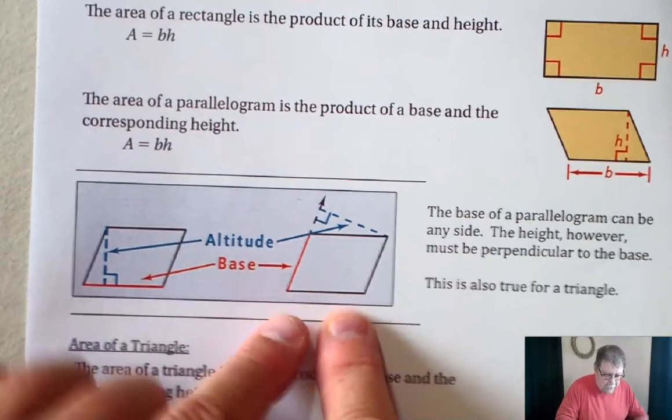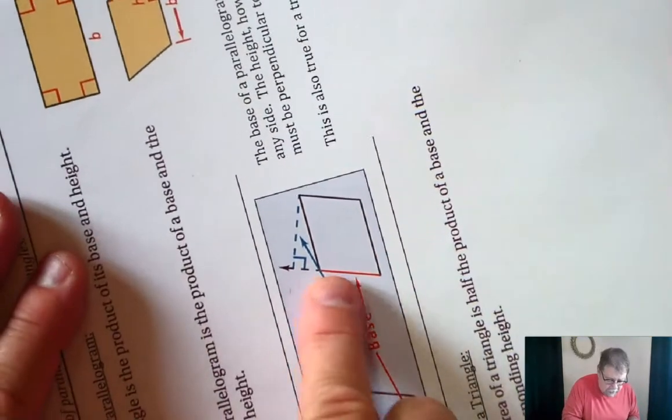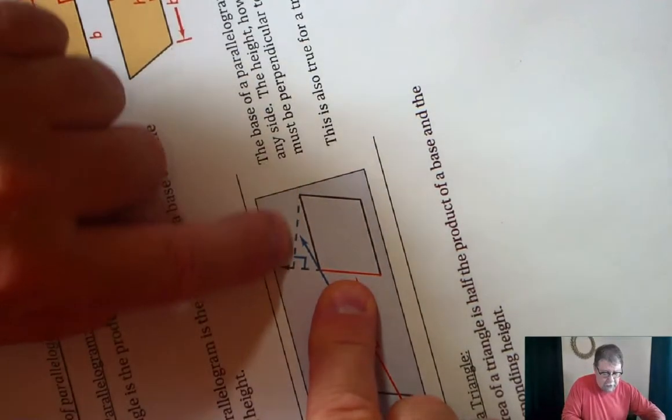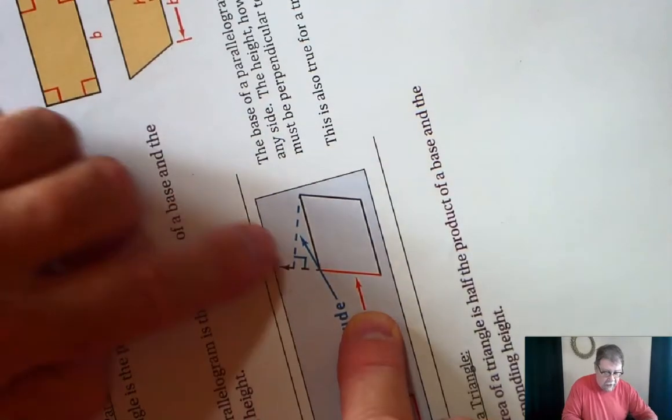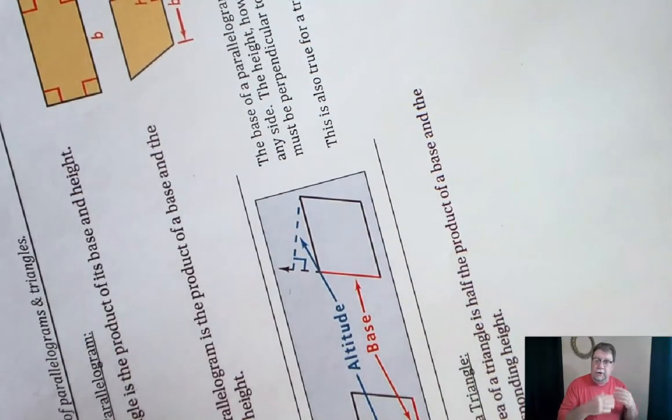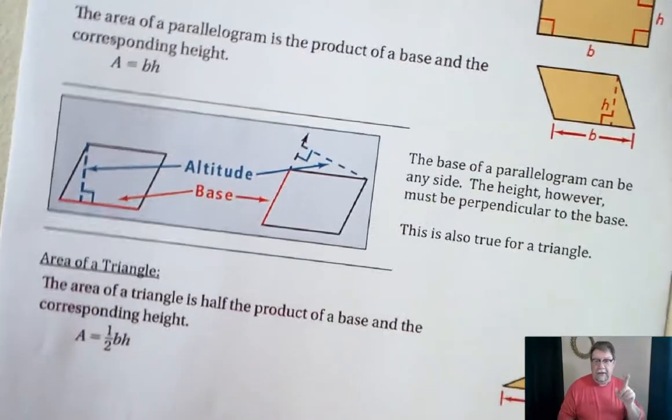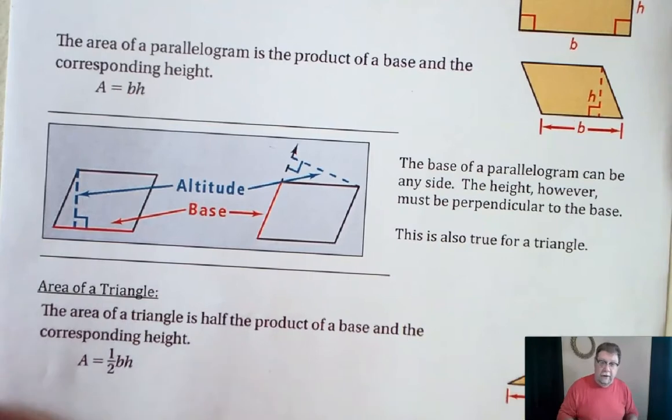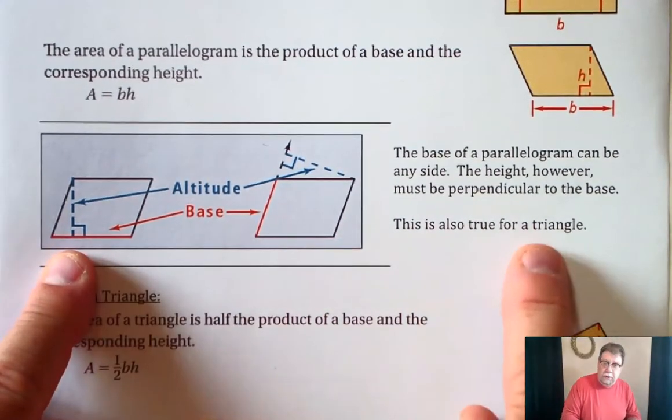So if you think about this shape, if I turn it, it might be easier to see. So here's the base, and the perpendicular to it would be that distance. If you drew it inside, it would be that height right in there. That is also a way to find the area. You can use either one of those measurements. It should give you the same answer. And we will look at an example that sort of proves that here in a little bit. So we have to make sure that it's perpendicular. It's also true for a triangle.